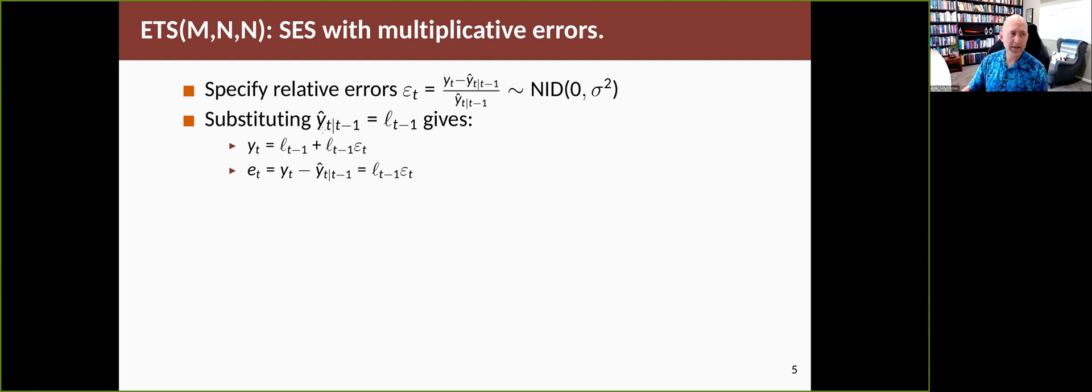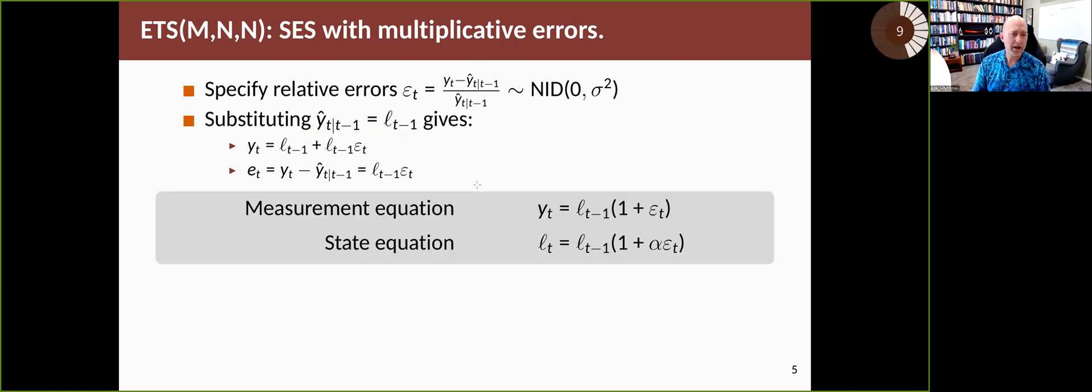So again, the point forecast yt hat is simply the previous level. And if we substitute this equation into here, we end up with y as a function of l and epsilon like this one. And the difference between what you see and what you predicted you would see, y minus y hat, is now given by lt minus 1 times epsilon. We rearrange that a little bit and we end up with a measurement equation and a state equation that looks like what's in the gray box there.